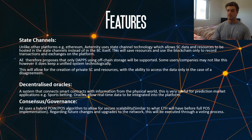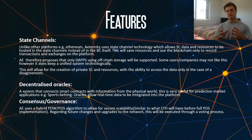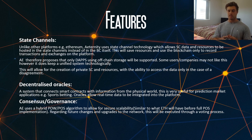Now on to the features, and the first and most important one is something called State Channels. Unlike in other platforms like Ethereum, Eternity uses State Channel technology to allow smart contract data and resources to be hosted in these State Channels instead of the blockchain itself. This saves resources on the blockchain as it only records transactions and exchanges on the platform. On platforms like Ethereum, smart contract data is stored on-chain and can be hundreds of gigabytes, which really bottlenecks the system and does not make for a scalable solution for mass adoption.